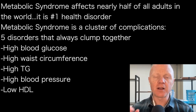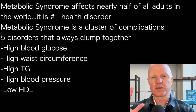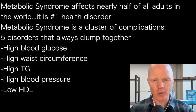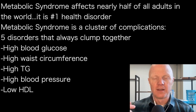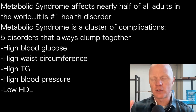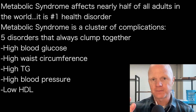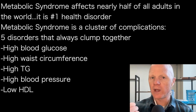Metabolic syndrome is a cluster of complications — in particular, five disorders that were noticed over the years to always clump together. They are, in no particular order, a bunch of highs and a low. The highs: high blood glucose, high waist circumference, high triglycerides, and high blood pressure. Those are the four highs. And then lastly, the one low: low HDL.